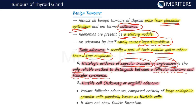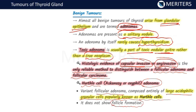There is one variant called Hürthle cell adenoma. This variant of follicular adenoma is composed entirely of large acidophilic granular cells, popularly known as Hürthle cells. Hürthle cell adenoma does not show any follicle formation. It is a variant of follicular adenoma and it does not show any follicle formation — that is important.